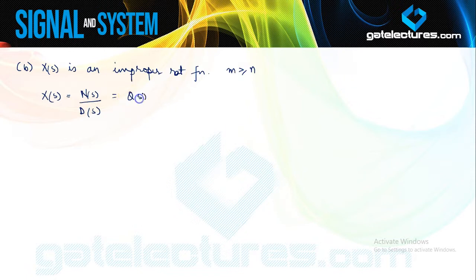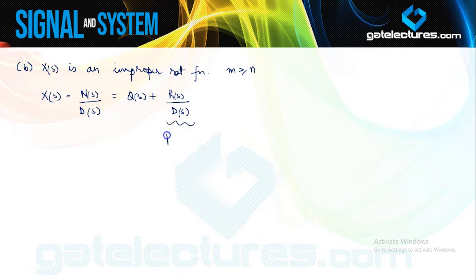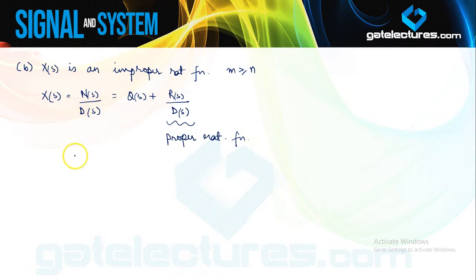Using long division, I can write this in the form of quotient plus remainder upon the denominator. After performing this long division, R by D is going to be a proper rational function, because the degree of the remainder is going to be less than the degree of the denominator. The quotient is going to have some terms of S whose inverse Laplace can be found in terms of delta functions and delta dash functions.